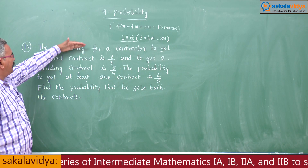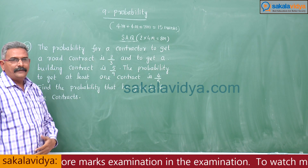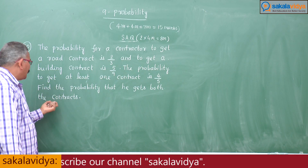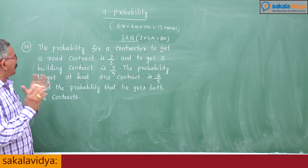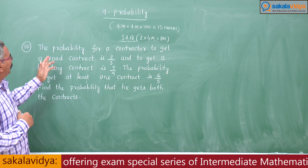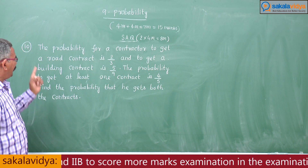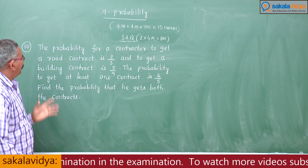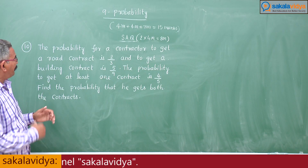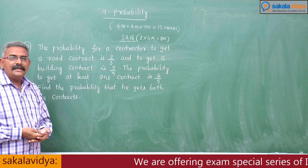Let me repeat the problem once again. The probability for a contractor to get a road contract is 2 by 3, and to get a building contract is 5 by 9. The probability to get at least one contract is 4 by 5. Find the probability that he gets both the contracts. Let us consider the two events: event A — getting a road contract, event B — getting a building contract. P of A equals 2 by 3, P of B equals 5 by 9, and P of A union B equals 4 by 5.